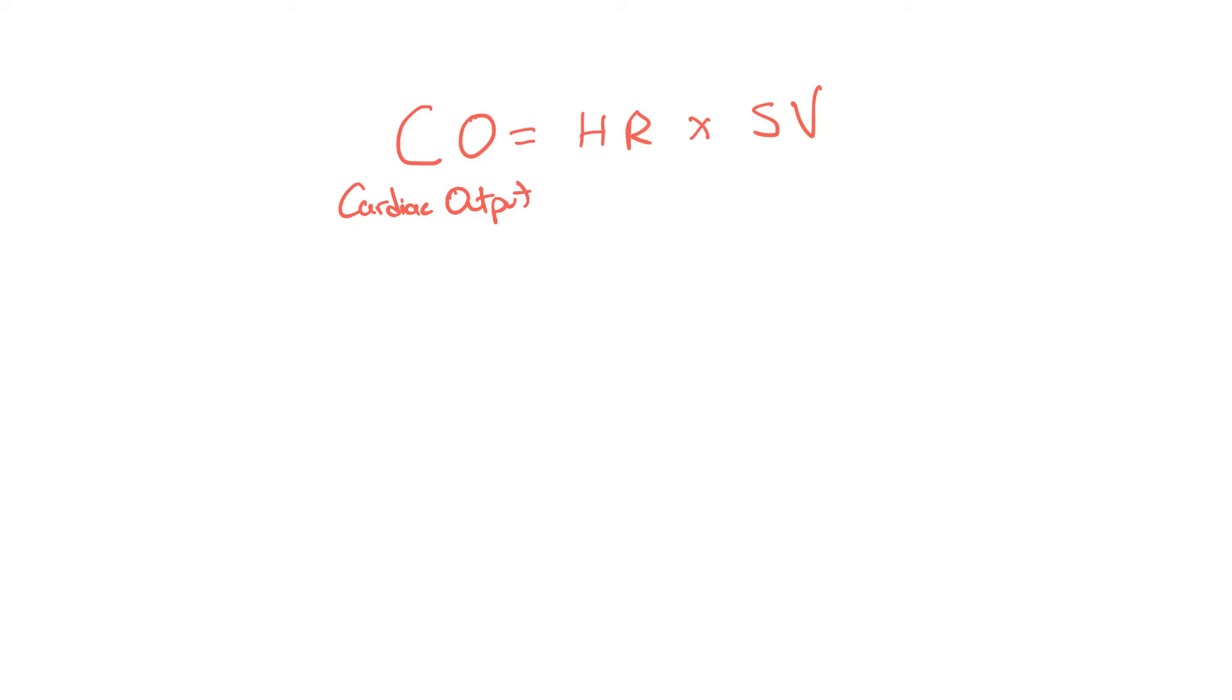So if we look at cardiac output, we need to know the heart rate, which is the beats per minute, and then the stroke volume, which is the amount of blood that is pumped out with each contraction of the ventricle. Usually it's the left ventricle that gets measured. Now we don't have a way pre-hospitally to measure this, but there are actually ways that they can measure how much blood is coming out of the ventricle. I think it's called the ejection fraction.